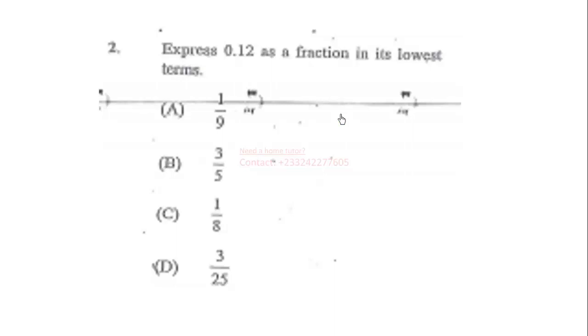Let's look at question 2. Express 0.12 as a fraction in its lowest terms. So 0.12 can be rewritten as 12 over 100. Now we can simplify this by looking for the highest common factor of 12 and 100, which is 4. So 12 is the same as 4 times 3, and 100 is 4 times 25. Then we can cancel the common factor, which leaves us with 3 over 25. So the correct answer is 3 over 25.